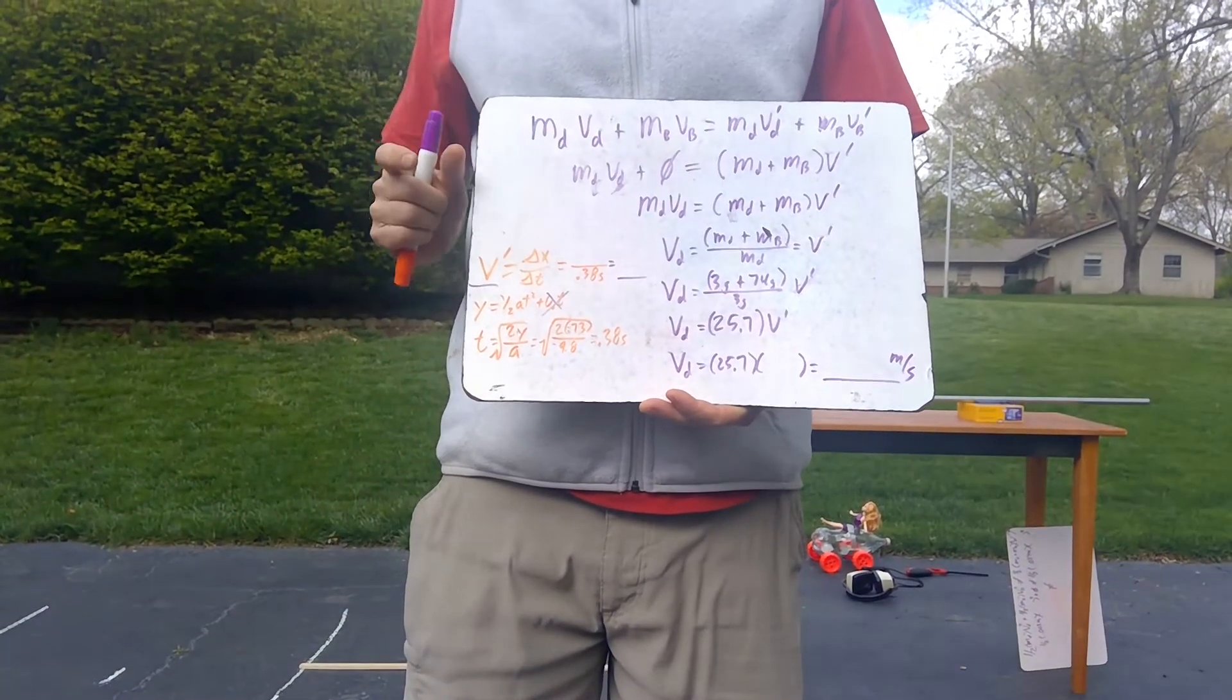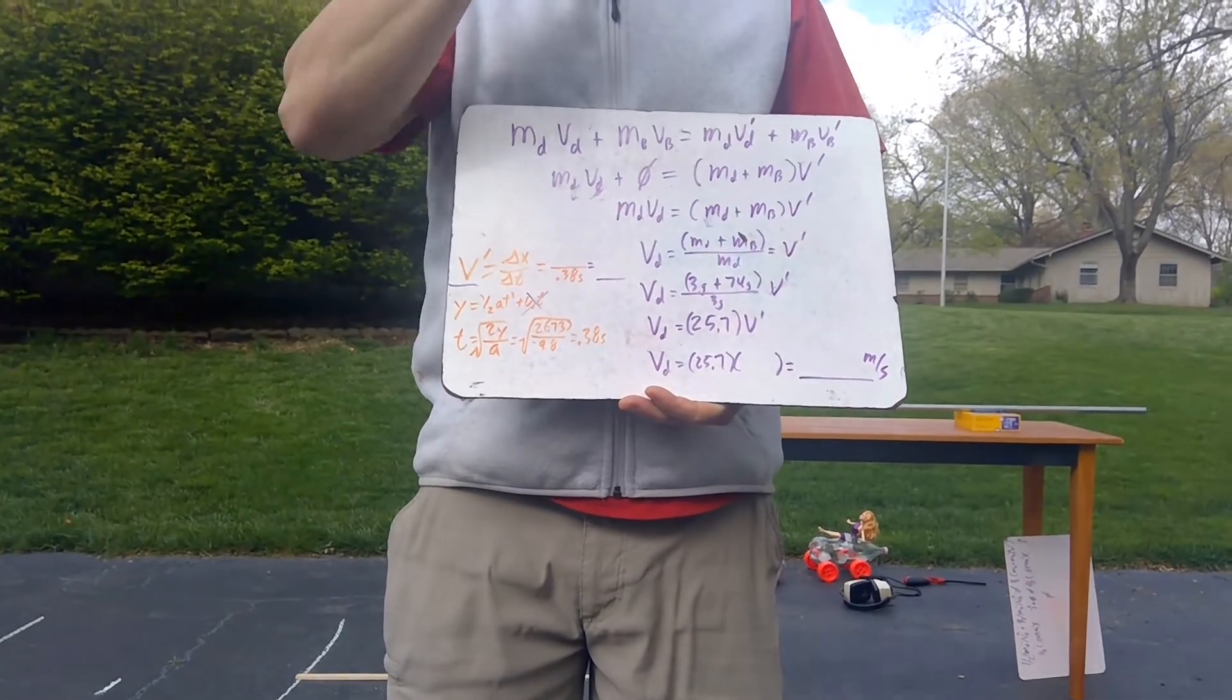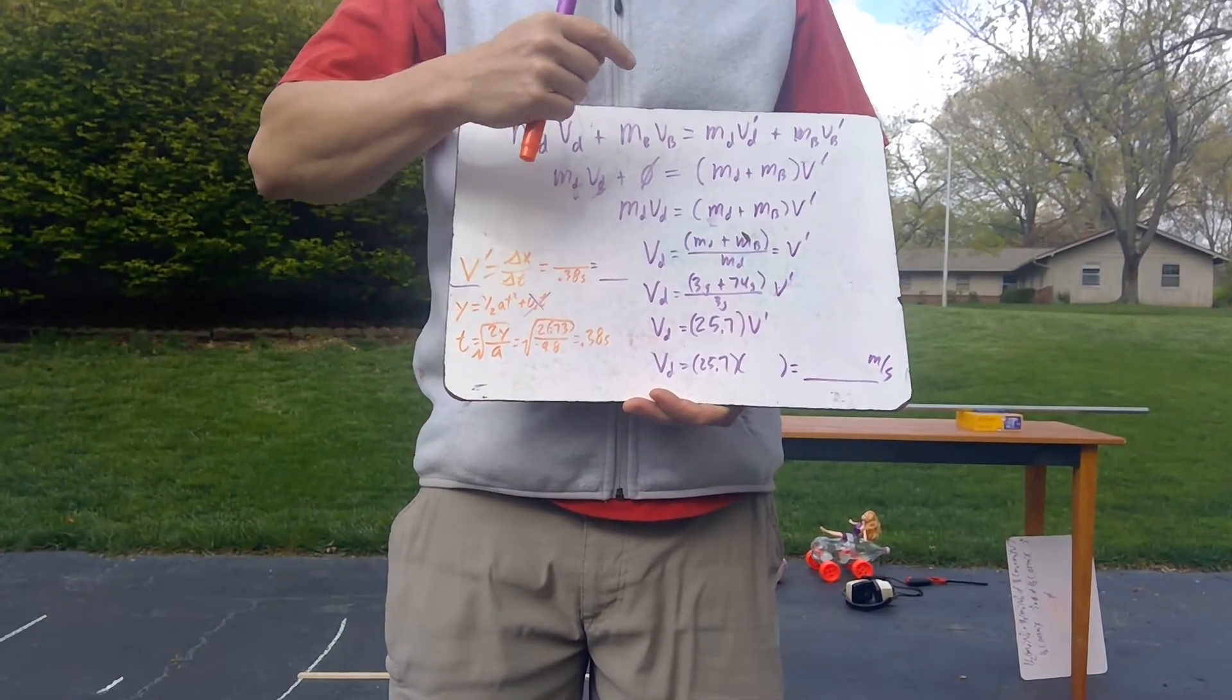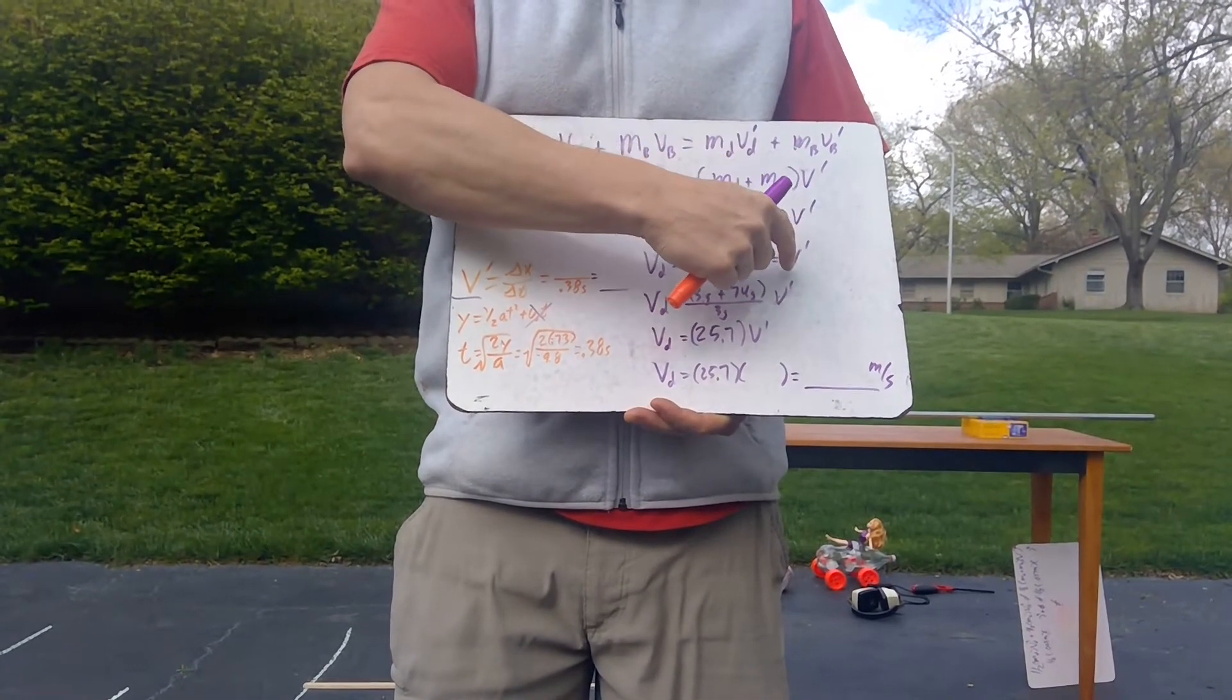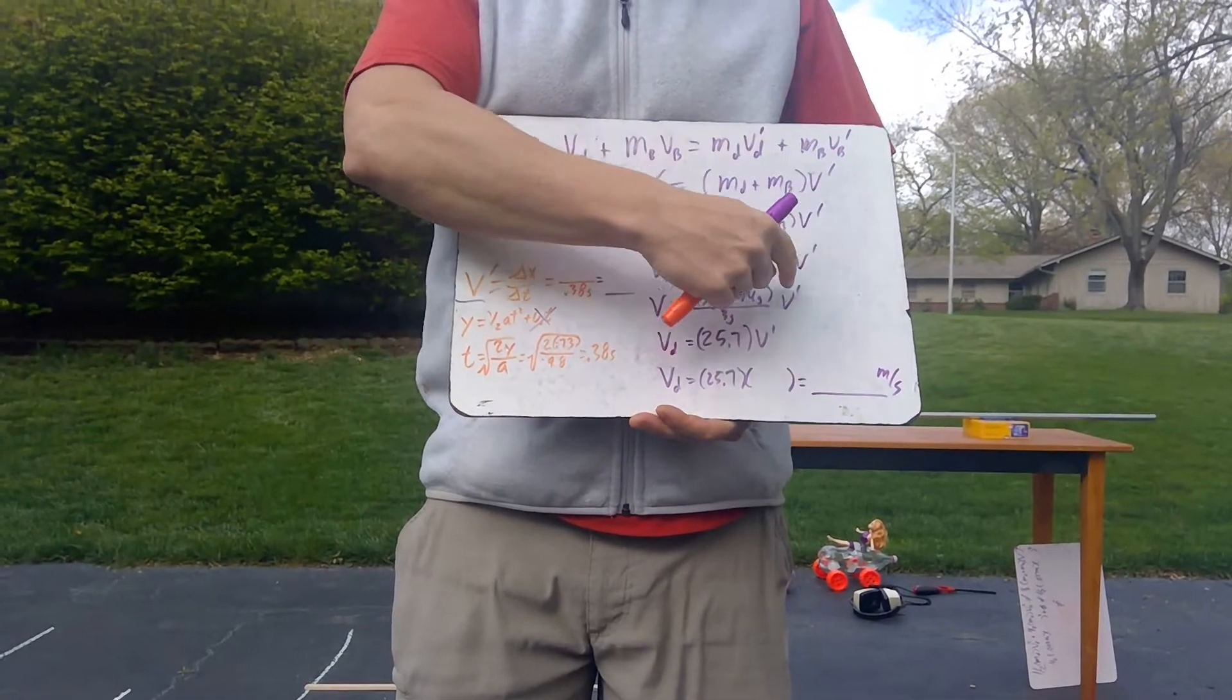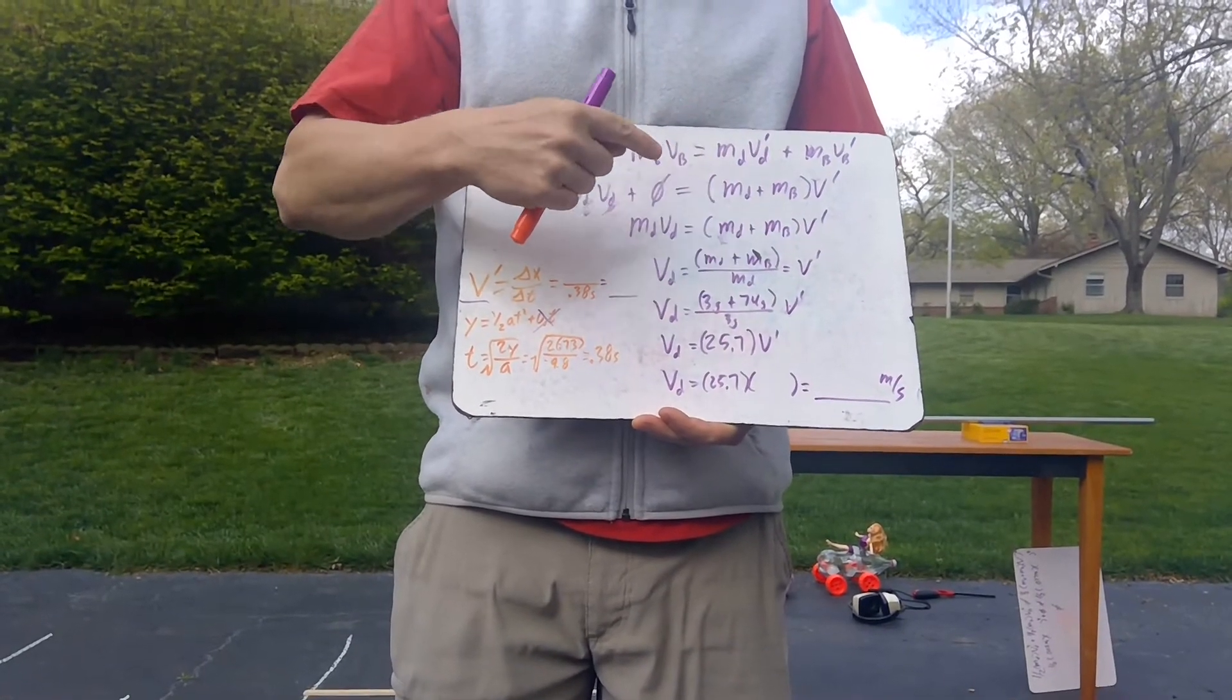Friction should have been minimal because I put it on the very end of the table, so there really shouldn't have been much friction. So there shouldn't have been a net external force. So now all we have to do is one thing. First, we have to calculate what the velocity, final velocity of the whole block is. Being more mass, if it's going slow enough, I can measure how fast it's going.